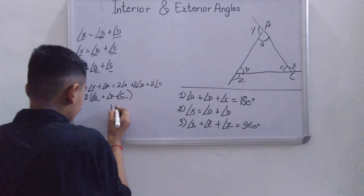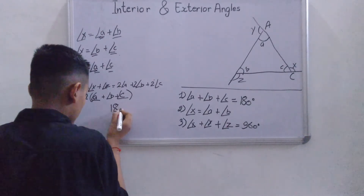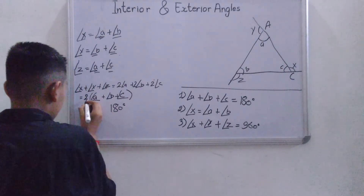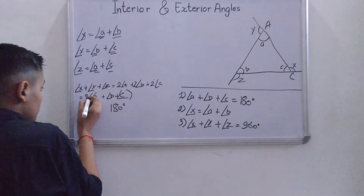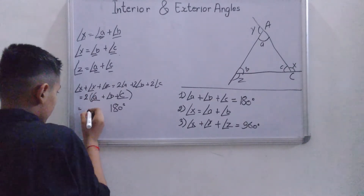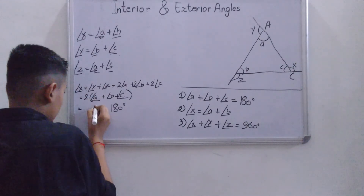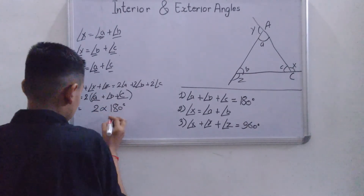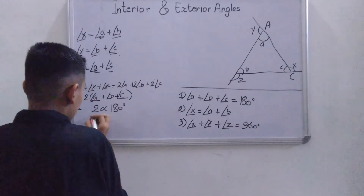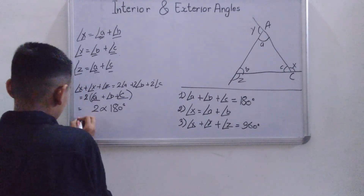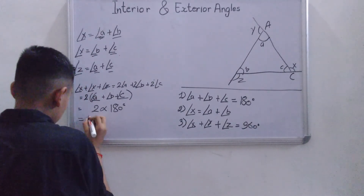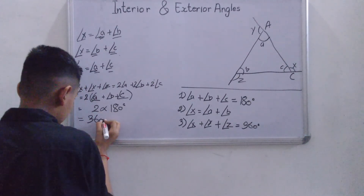Now we will use the property that the sum of all the interior angles equals 180 degrees. Substituting, we get 2 multiplied by 180 degrees, and the answer is equal to 360 degrees.